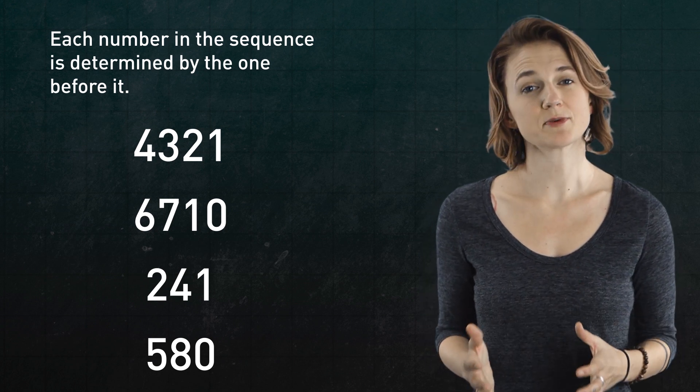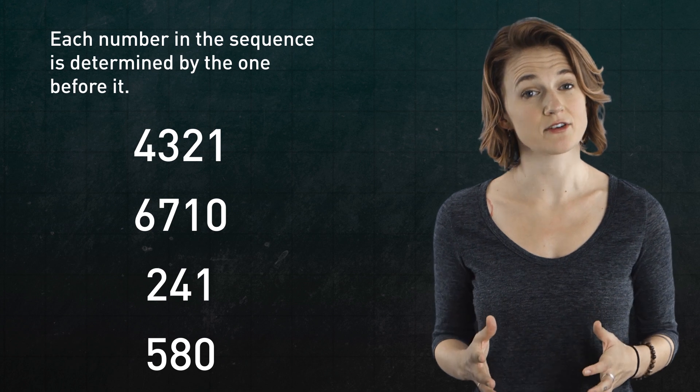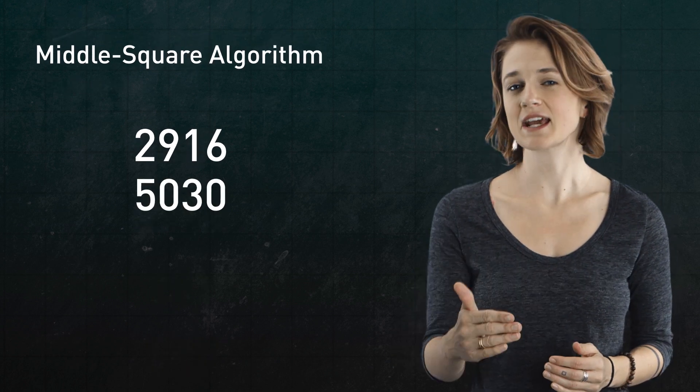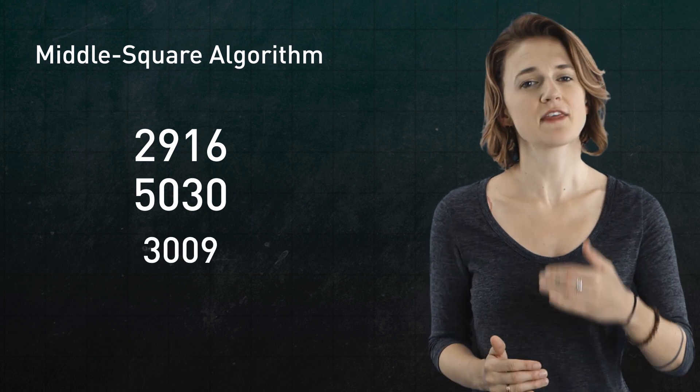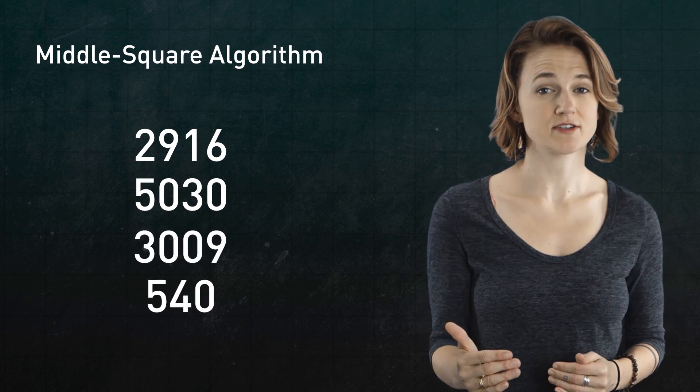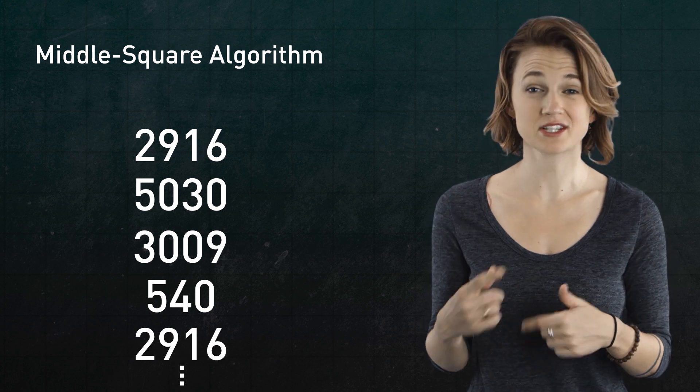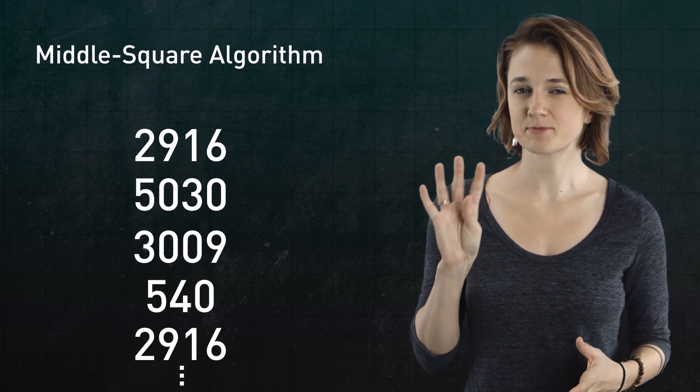The sequence can repeat very quickly. For example, if a sequence produced using von Neumann's middle square algorithm has the term 2,916, then the next number is 5,030, then 3,009, then 540, and back to 2,916, where it just keeps repeating. This cycle has period 4.